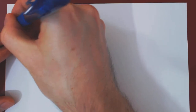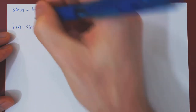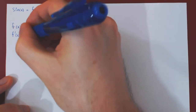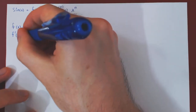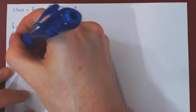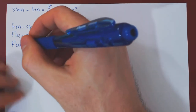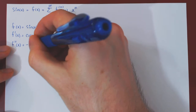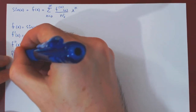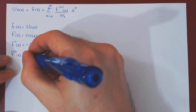Let's start differentiating. f of x is sine of x — this is the 0th derivative, the function itself. The first derivative f prime of x is cosine of x. The second derivative is negative sine of x. The third derivative: the derivative of negative sine is negative cosine.